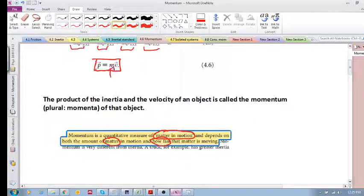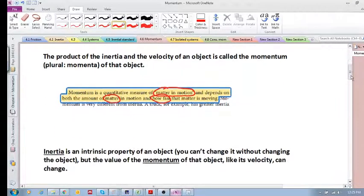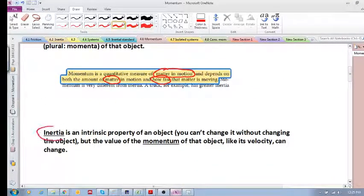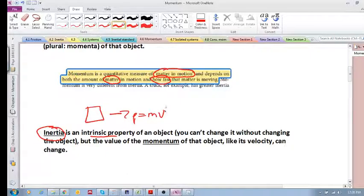Inertia is an intrinsic property you can't change without changing the object. So inertia can't change unless you change the object, but the momentum can change because momentum is mv.